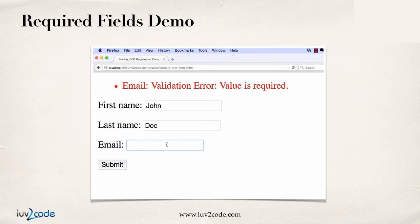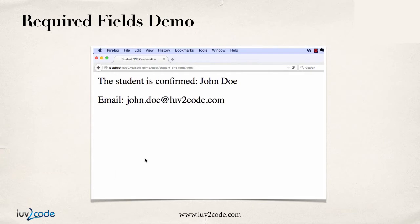I'll go ahead and enter my email address. My email address is johndoe@lovetocode.com. And then I'll hit submit. Great, so this worked out fine. We gave the information for last name and email address, that passed the validation test and it took us to the actual confirmation page. So we see that our validation rules were working as desired.